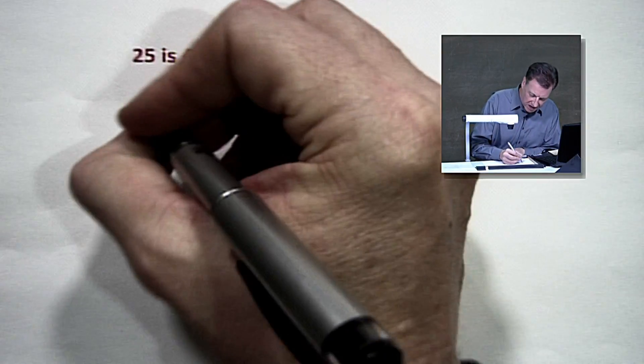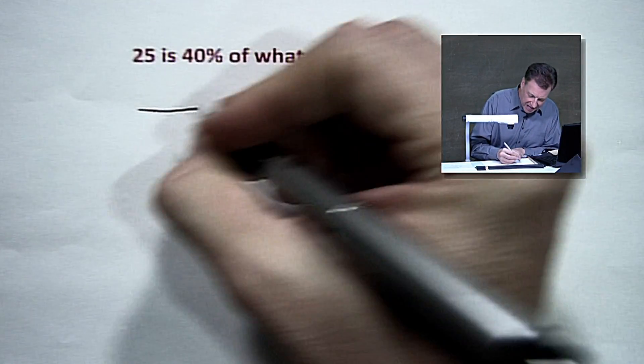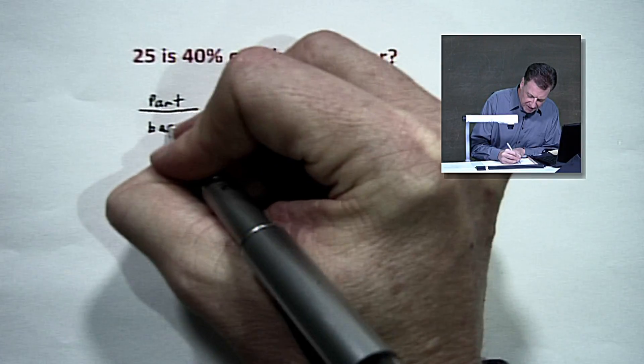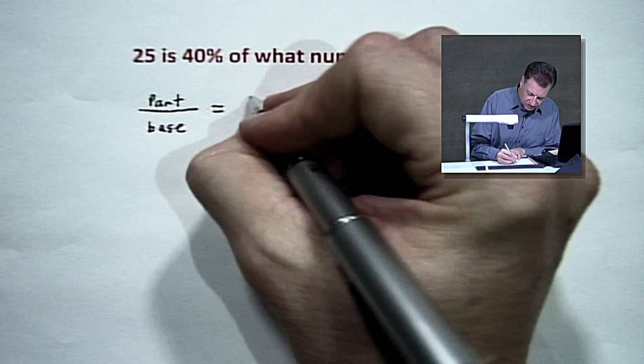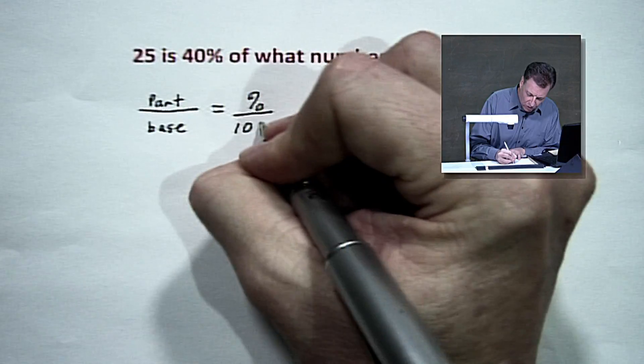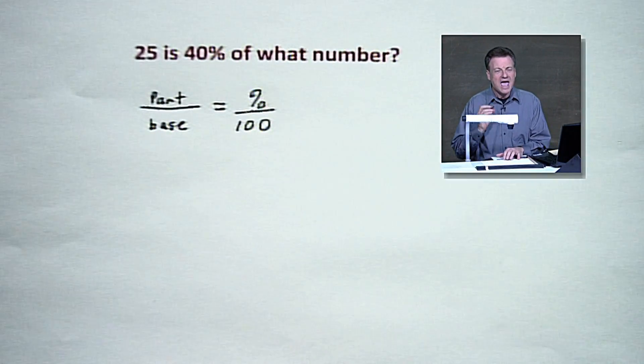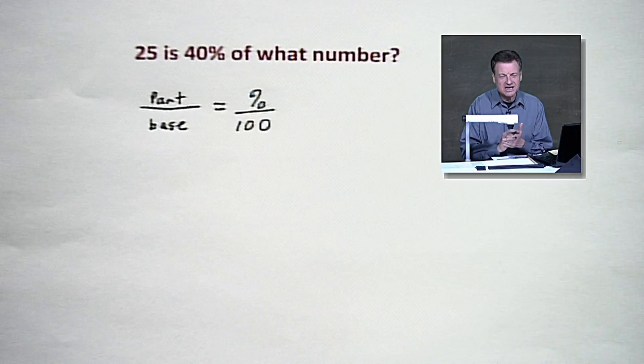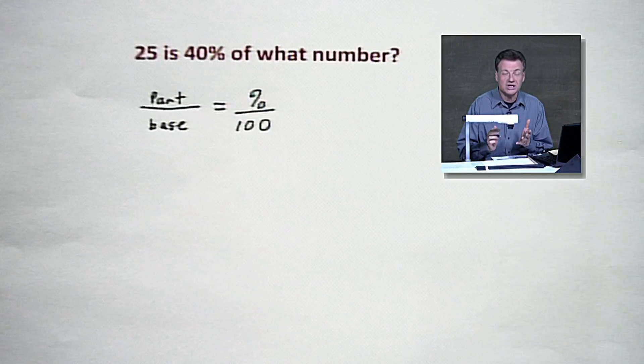So let's go back to that. I like to call it the part over the base, or divided by the base, equals the percent over 100. This is our starting point. And I really think, folks, if you get to this point right here, it's so much easier to determine what operations you're going to need to do.